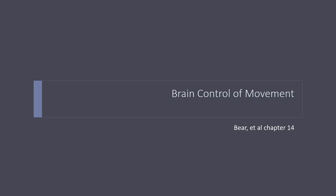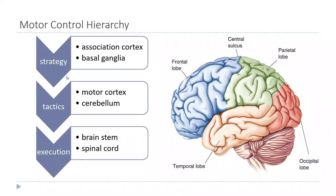Now let's talk about how movement is controlled by the brain. The process for initiating a movement from the brain is kind of complicated, so it may be helpful to break it down into a simplified hierarchy of sorts.